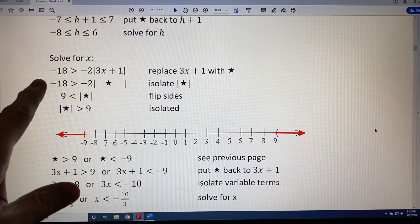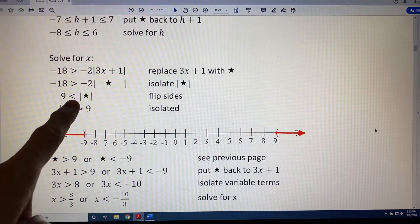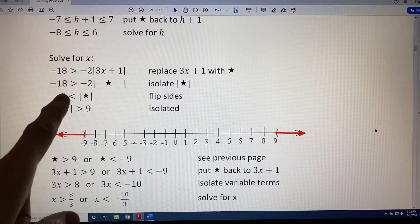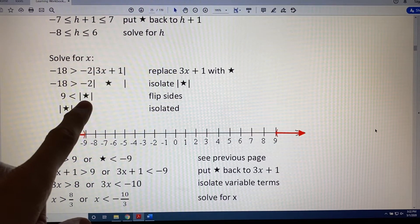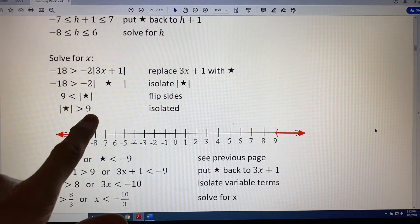Negative 18 divided by negative 2 is positive 9. And since we divided by a negative, we swapped the direction of our inequality symbol. So, now what we have is 9 is less than the absolute value of star. Flipping sides, we would say the absolute value of star is greater than 9.